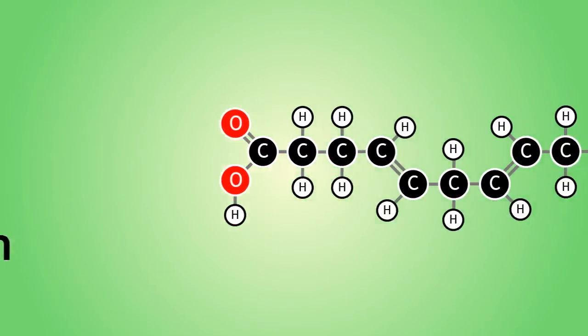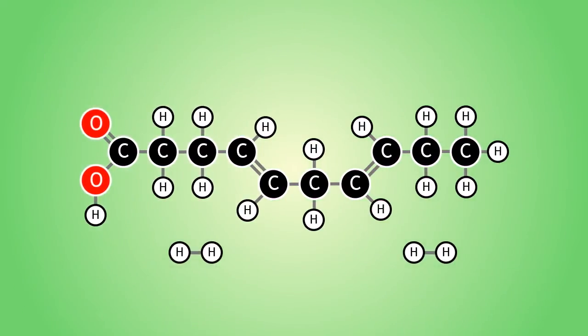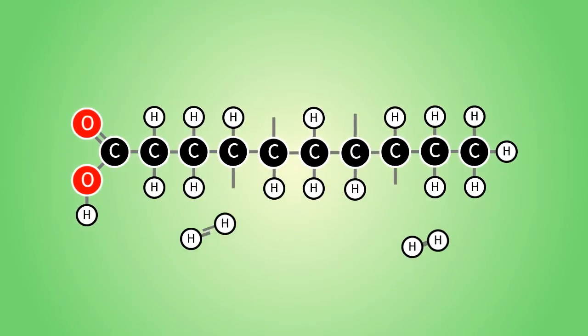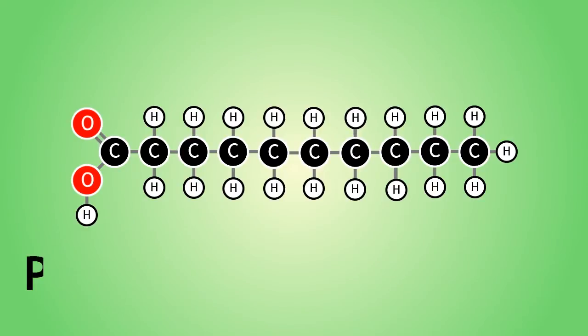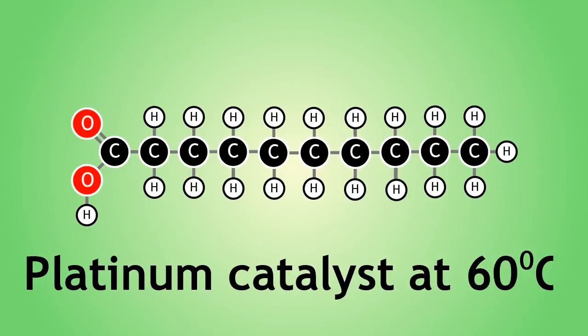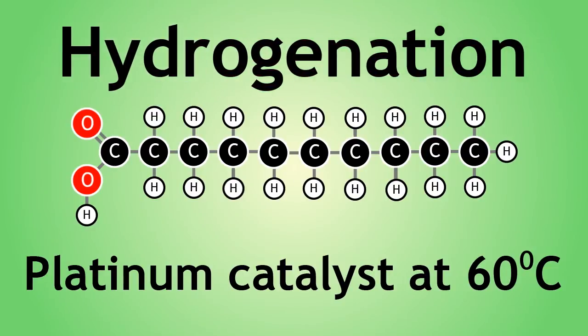We can hydrogenate or add hydrogens to carbon-carbon double bonds by passing hydrogen gas over these molecules in the presence of a platinum catalyst at 60 degrees Celsius. This is a hydrogenation reaction.